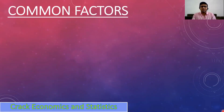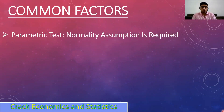Let's begin with the common factors in all three T-tests. The first common factor is that all T-tests are parametric tests, which means that the normality assumption is required to perform these three T-tests. The population from which we are collecting the sample must be normally distributed.